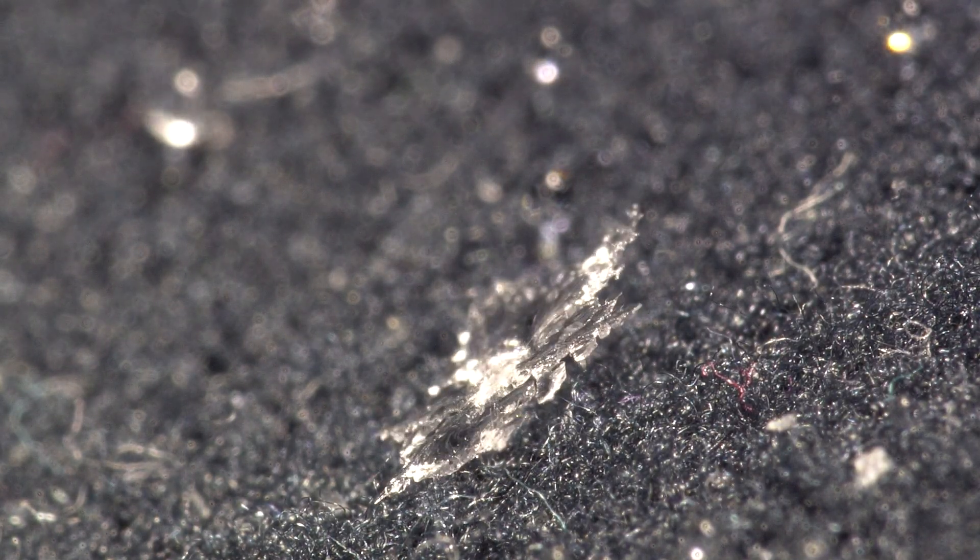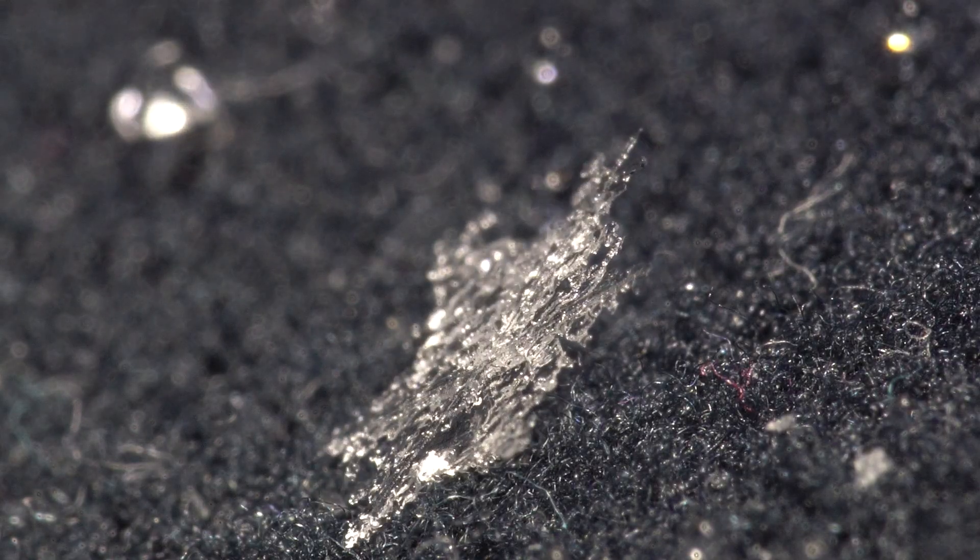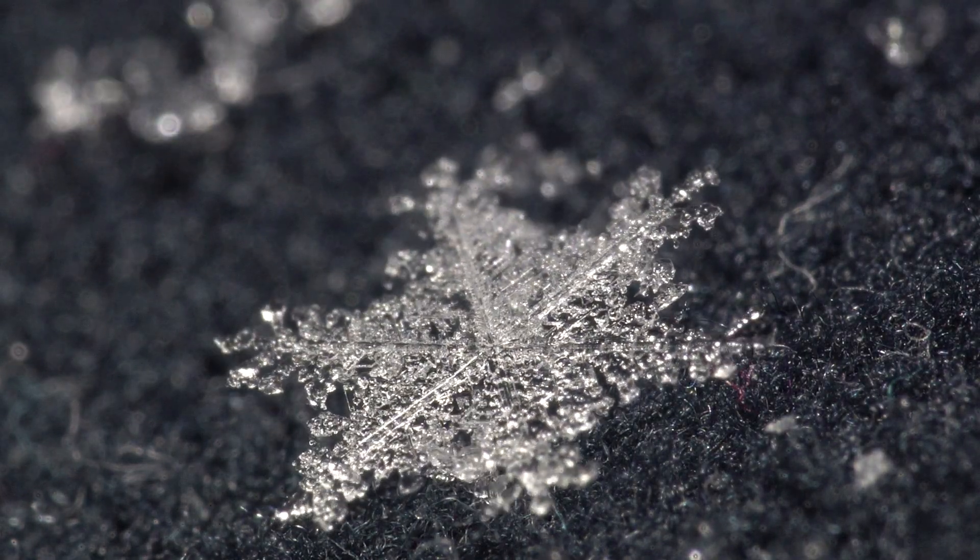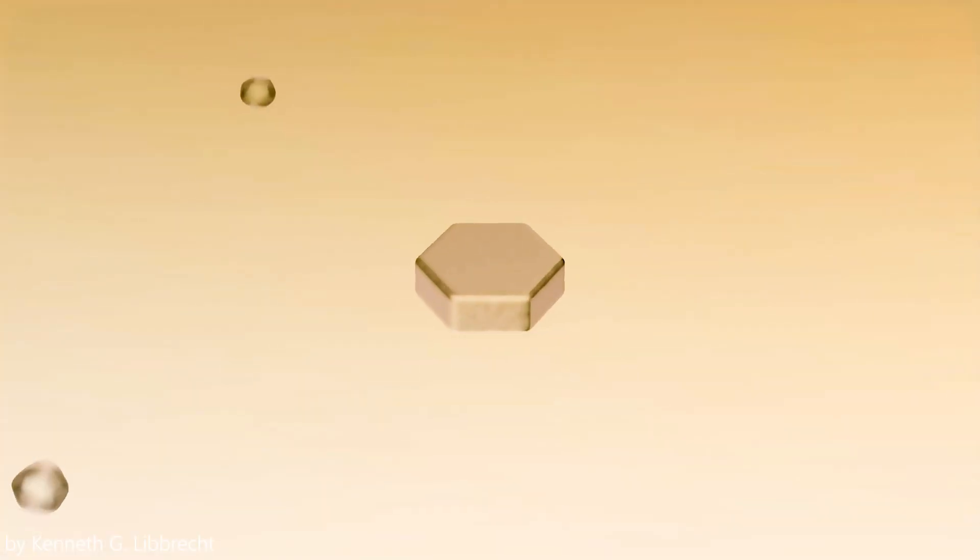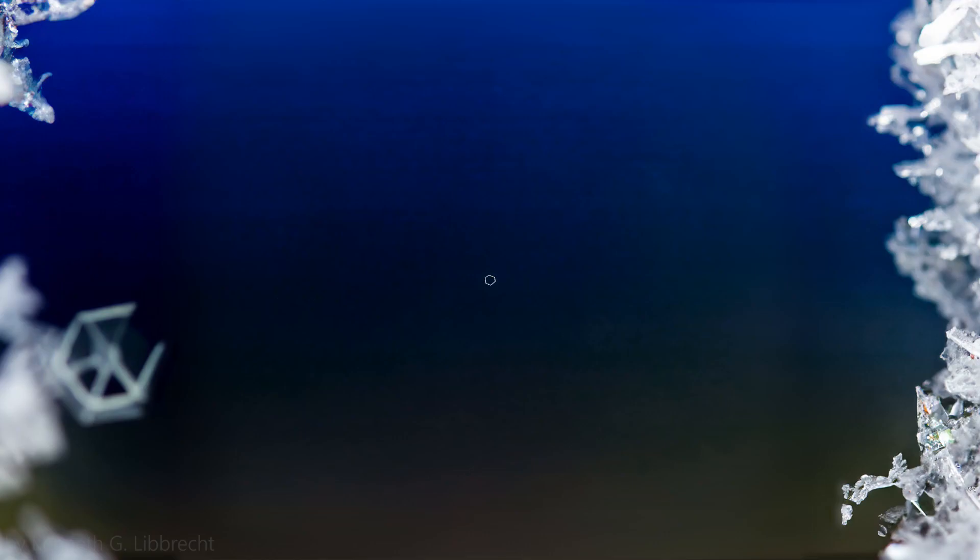If a droplet freezes, it will start to grow and it will absorb water vapor from the air, and the droplets around it will start to evaporate because the vapor pressure of supercooled liquid water is higher than the vapor. So this single crystal takes maybe about 100,000 droplets evaporating to make a good-sized snowflake and eventually then these fall to the ground.